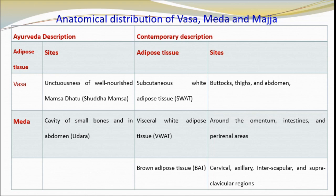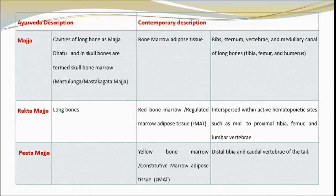Vasa accounts for approximately 85% of total adipocytes of the body, while Medha may account for around 10%. Majja is present in the cavities of long bones as Majja Dhatu, and in skull bones is termed as Mastulung or Mastaka-gata Majja. In contemporary description it may be considered as bone marrow adipose tissue, present in ribs, sternum, vertebrae and medullary canal of long bones. Rakta Majja is present in long bones and may be considered as red bone marrow or regulated marrow adipose tissue, present interspersed within active hematopoietic sites such as mid to proximal tibia, femur and lumbar vertebrae. Peeta Majja may be considered as yellow bone marrow or constitutive marrow adipose tissue, present in distal tibia and caudal vertebrae.